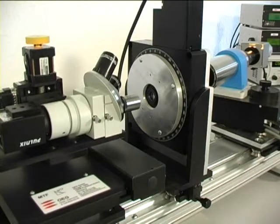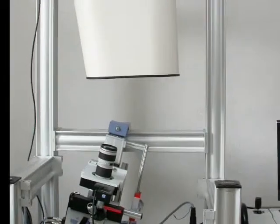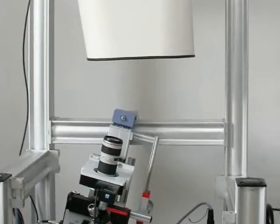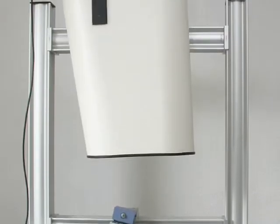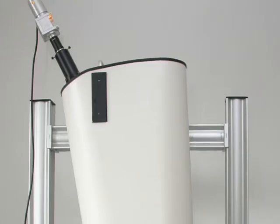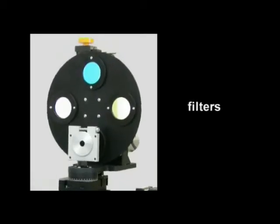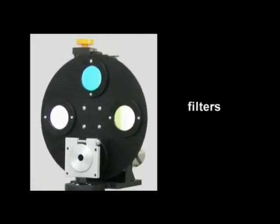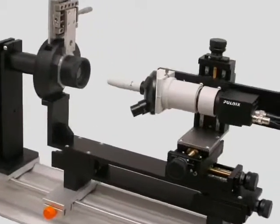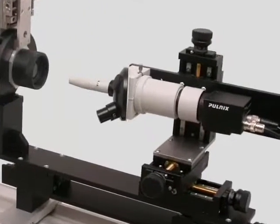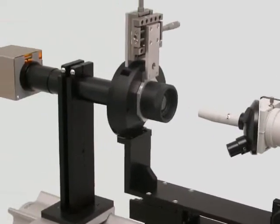MTF variant offers universal interfaces for data export into other applications. It can be adapted to almost all special measuring tasks, concerning for example the length of the stages, the free opening of the precision turntable, the focal length and free aperture of the collimator, the measuring wavelengths, and the working distance — including the measurement of image intensifier tubes as one example for special solutions.